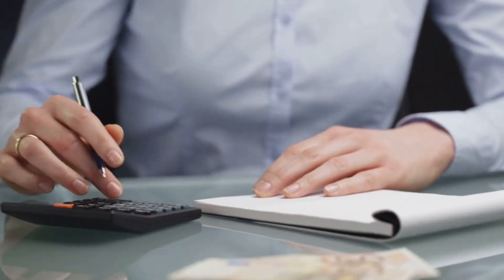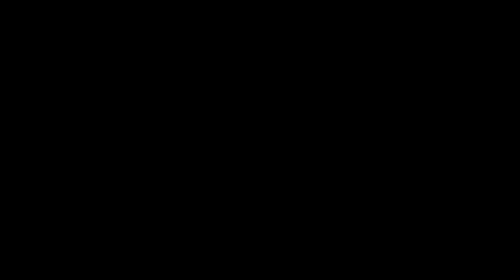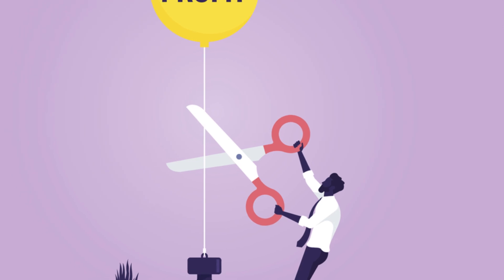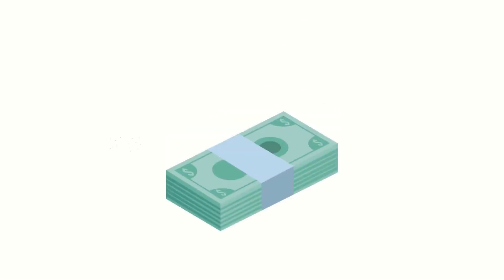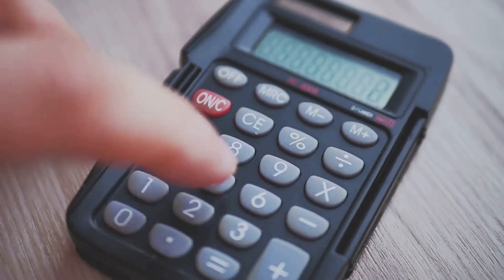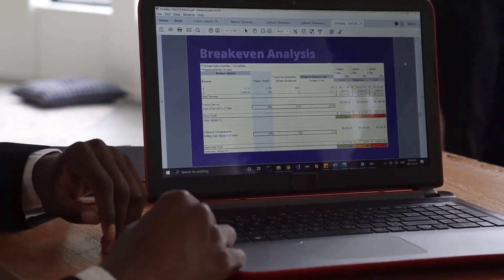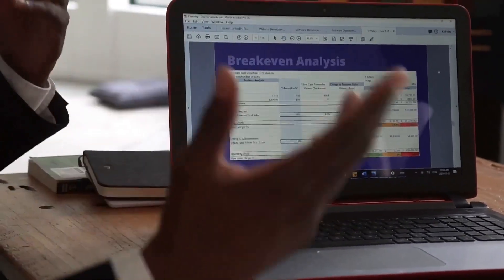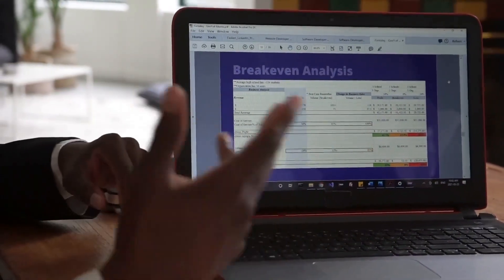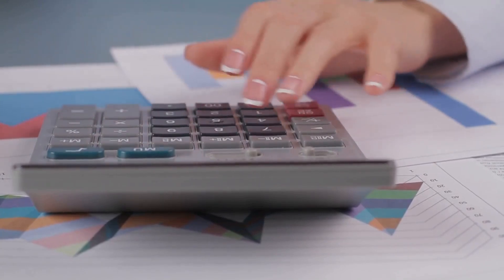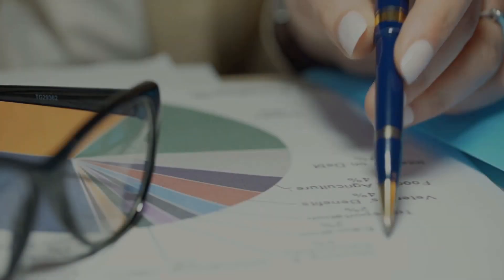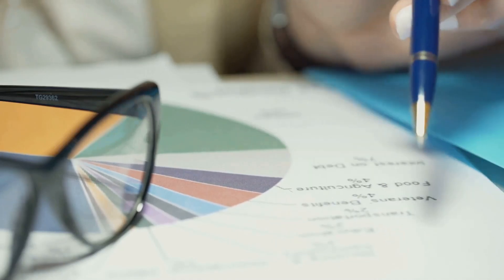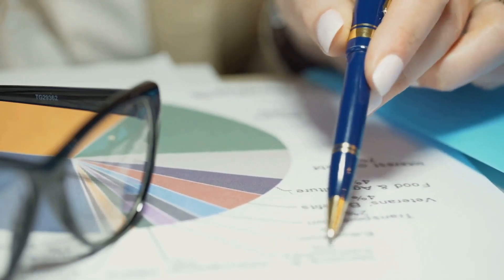In the world of business, pricing can be a delicate dance. You want to set your prices high enough to ensure profitability, but low enough to attract customers. But how do you find that sweet spot? The answer lies in understanding your unit cost. Your unit cost is the total expense incurred to produce, store, and sell one unit of your product or service. This includes direct costs like materials and labor, as well as indirect costs such as marketing and overhead. Calculating your unit cost might seem tedious, but it's crucial for making informed pricing decisions.